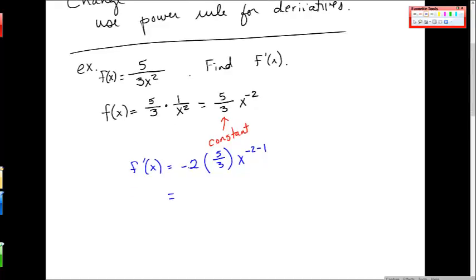So this is negative 2 times 5 thirds. I don't know if you guys remember how to multiply fractions, but this is 2 over 1 times 5 thirds. This is negative 10 thirds, and then negative 2 minus 1 is negative 3.